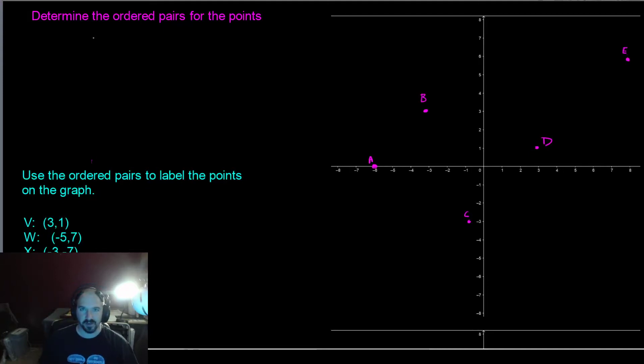A little practice with identifying and finding points on the graph. So in this first set, I have a set of points labeled on the graph A, B, C, D, E. And what we want to do is determine their ordered pairs.